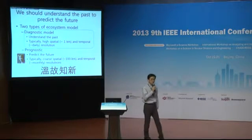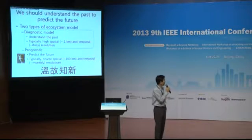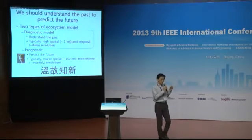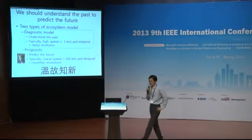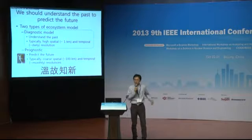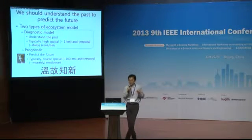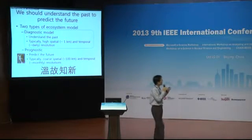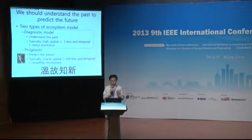There are two types of ecosystem models. One is the diagnostic model, the other is the prognostic model. The prognostic model is used to predict the future, and it typically has coarse spatial and temporal resolutions — like 100 km and monthly. The diagnostic model is needed to understand the past, typically requiring very high spatial and temporal resolution input data from satellite, like 1 km and daily resolution. To predict the future, we should first understand the past.